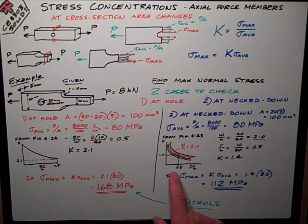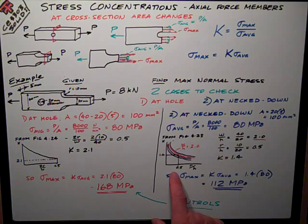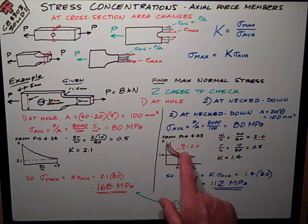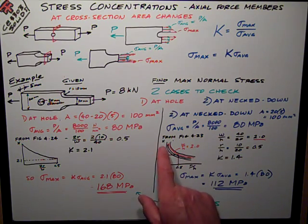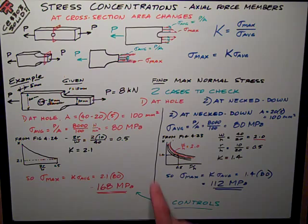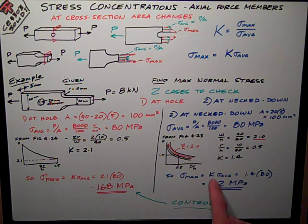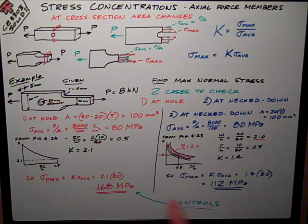So once again, I go to that point on the horizontal axis, R over H of 0.5, go up to the correct curve, which is W over H 2.0, and then I go over to the left to find my K factor, 1.4. So my maximum stress is that 1.4 times my average stress, 80, that's equal to 112 megapascals. Because this one controls at the hole, maximum stress 168 megapascals.